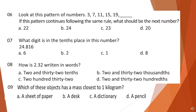Question 6: Look at this pattern of numbers: 3, 7, 11, 15, 19. If this pattern continues following the same rule, what should be the next number?